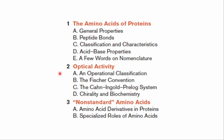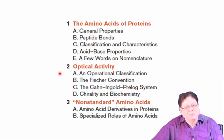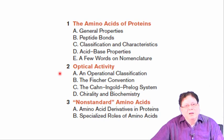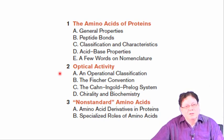Remember, capital L does not mean levorotatory. Capital L is the notation used for absolute configuration. Except glycine — glycine does not have any side chain — the other 19 amino acids belong to the L category.